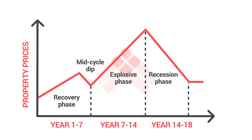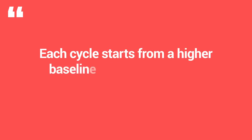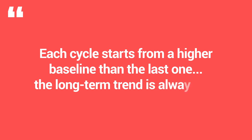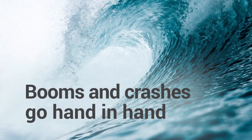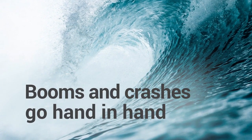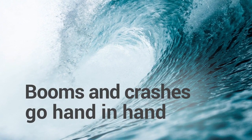There's something that can be easily missed: when you look at that chart, you'll see that when you get the crash and it bottoms out, it bottoms out at a higher level than the starting point of the cycle. So each cycle starts from a higher baseline than the last one. That means the long-term trend of prices is always upward — it goes up, it goes down a bit, but not as low as it was to start with. You'll often hear people say 'property prices always go up, you're safe in property' — and yes, that is correct over the long term.